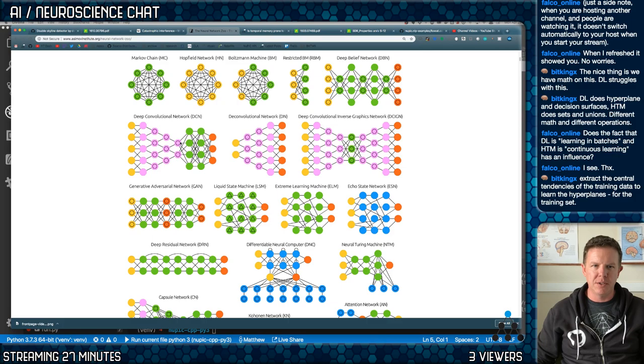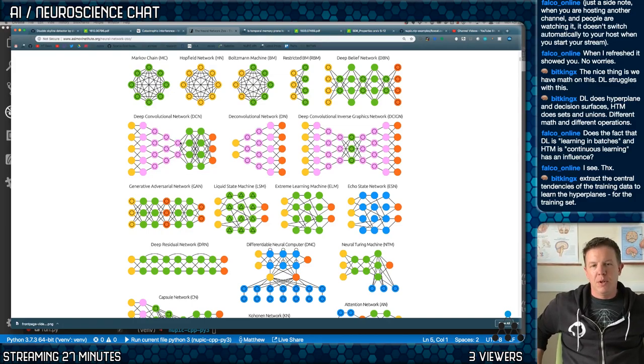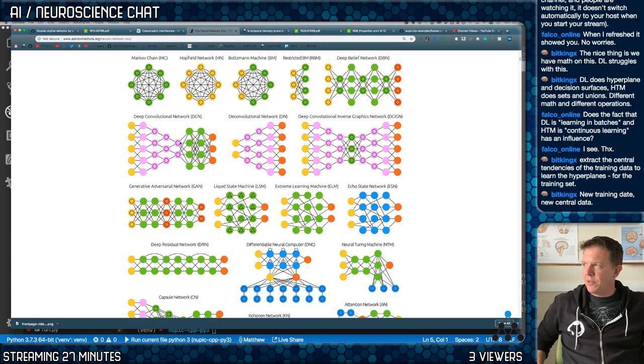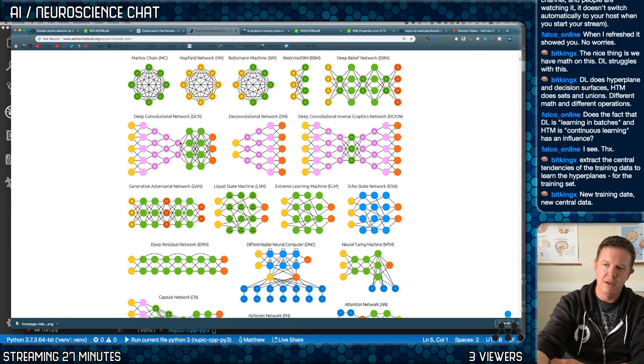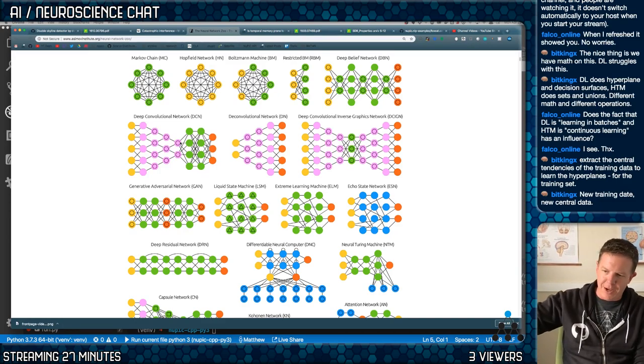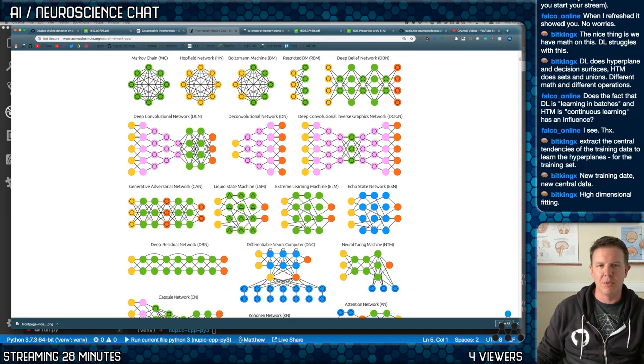Extract the central tendencies of the training data to learn the hyperplanes for the training set. You went a little bit over my head, but I think I know what you're saying. The central tendencies of the training data. Yeah, yeah, yeah. So you're overfitting in a way. Could you call catastrophic forgetting sort of orthogonal to overfitting? Because you could say that every time you apply the back propagation of error, you're overfitting to whatever data signature you're getting. Or that central tendencies of the data. You could say you're potentially overfitting for that and underfitting for whatever you've previously learned at that point.